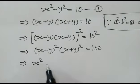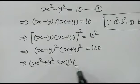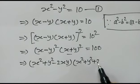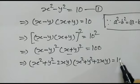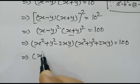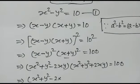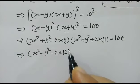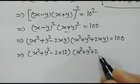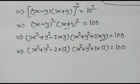Expanding this: (x squared plus y squared minus 2xy)(x squared plus y squared plus 2xy) equals 100. Since xy equals 12, we substitute 2xy equals 24, giving (x squared plus y squared minus 24)(x squared plus y squared plus 24) equals 100.